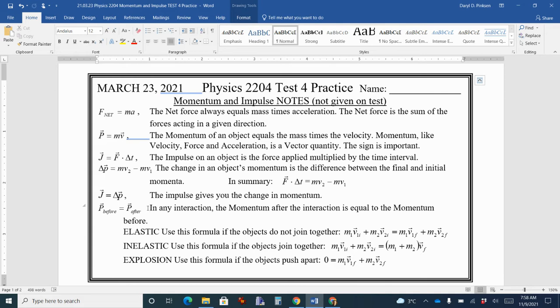So we look at three different scenarios. One of them is elastic. That's when the objects bounce off each other. They don't join together. So they go off as separate objects after they collide.